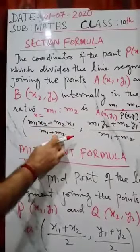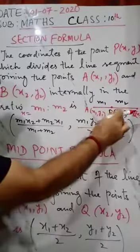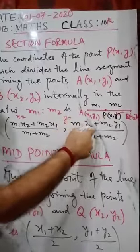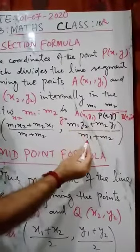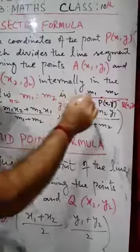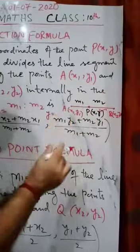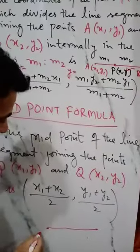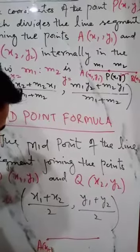And to find the value of y, y equals m1y2 plus m2y1 upon m1 plus m2. Now suppose P lies in the mid of AB...